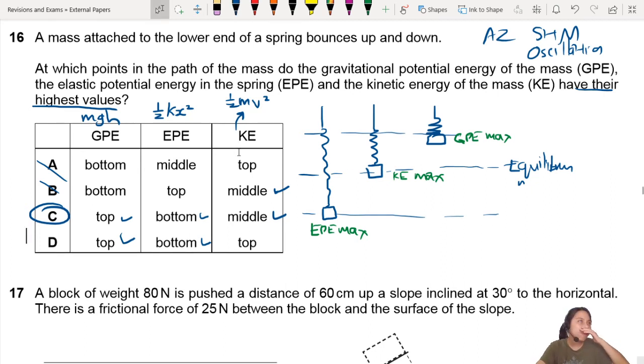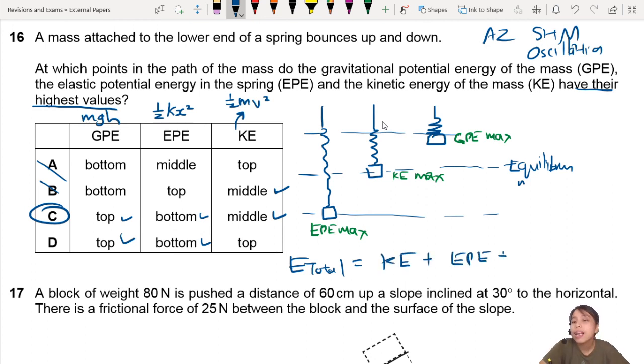So remember, there are some paper 2 questions that will ask you about these kind of things. Remember, you are changing between GPE, KE, and EPE. But total energy is conserved. So they take turns to change. KE plus EPE plus the last one, GPE. Okay, next question.